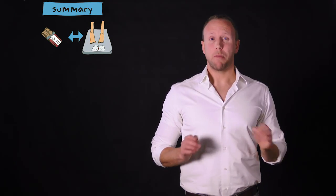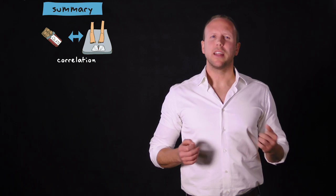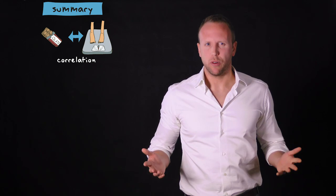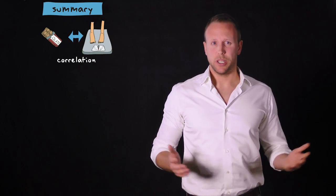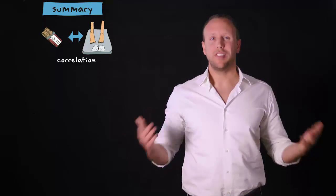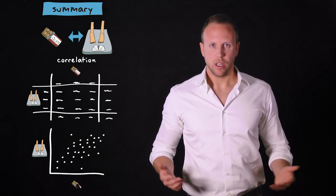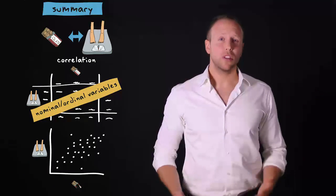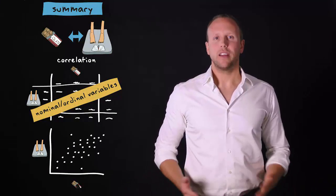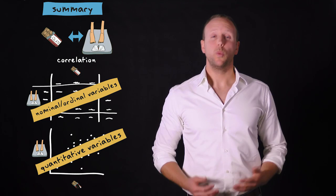What have you learned? Not that chocolate consumption and body weight are correlated. I think most of you were already aware of that relationship. What you have learned in this video is that we can display relationships between two variables by means of tables and by means of graphs. When the variables in a study are measured on a nominal or ordinal level, we use a contingency table. And when they are measured on a quantitative level, we use a scatter plot.